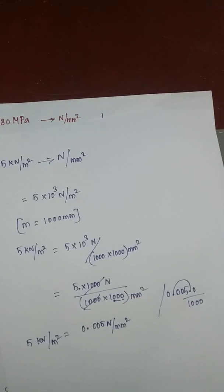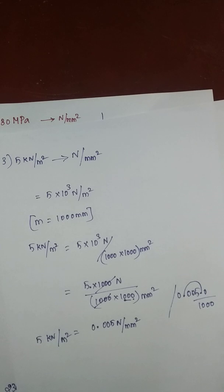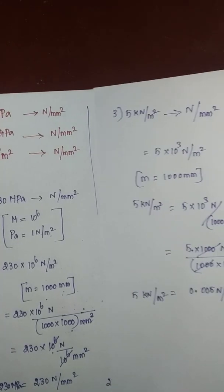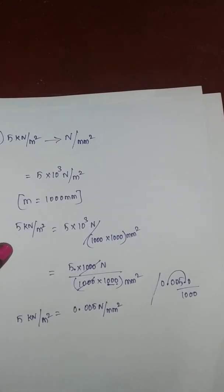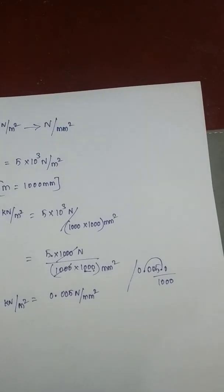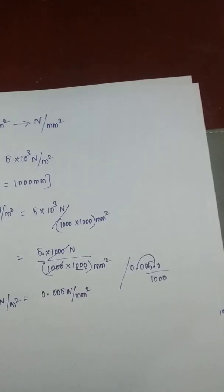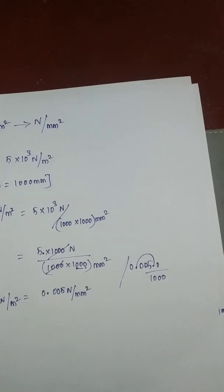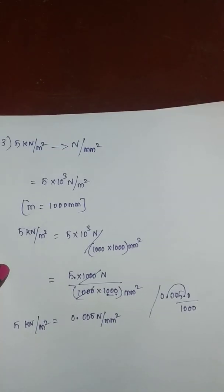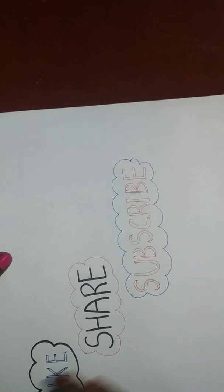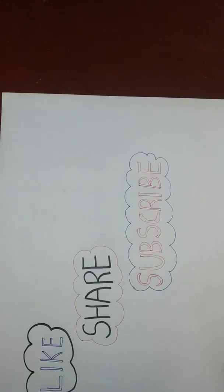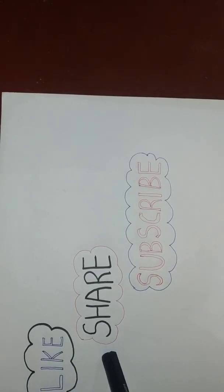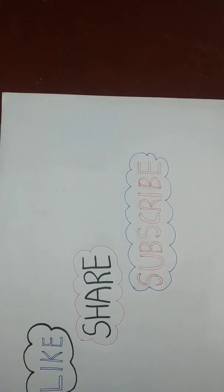5 kN per m² is equal to 0.005 N per mm² — simple. Thank you for watching this video.